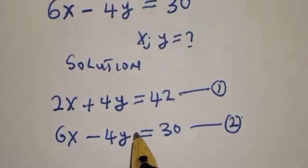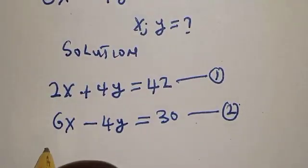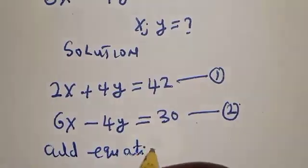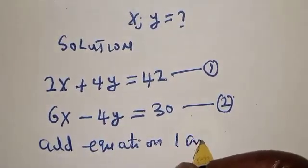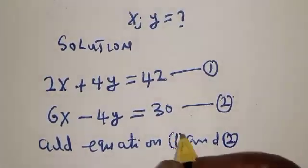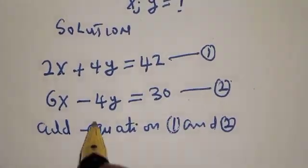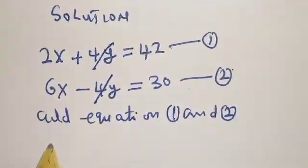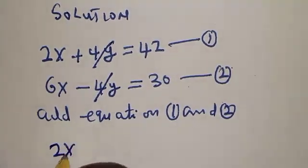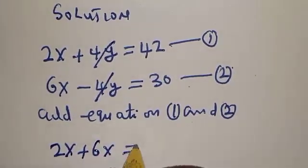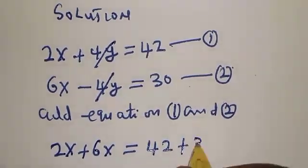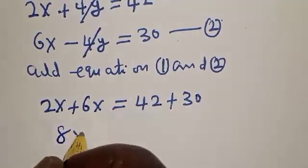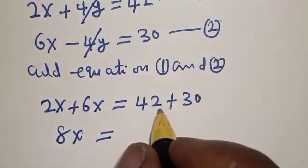Now, since we're using elimination method, let's add equation 1 and 2 together. If you add equation 1 and 2, this one will cancel this. We have 2x plus 6x equals 42 plus 30.